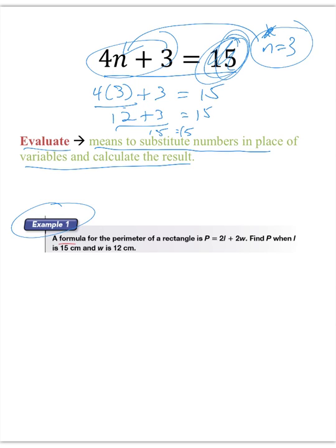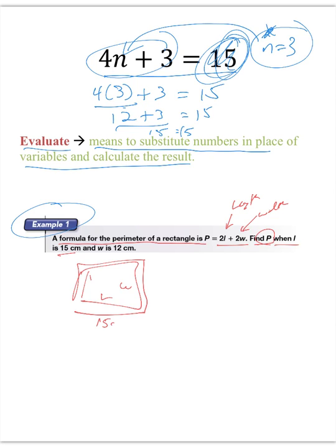It says a formula for perimeter of the rectangle is P, which means perimeter, is equal to 2L plus 2W, where L is equal to the length and W is equal to the width. So you have this rectangle, you have an L, you have a W, and the perimeter all the way around would be P. And it says find P, find the perimeter when L is equal to 15, when L is 15 centimeters, and when W is equal to 12 centimeters.